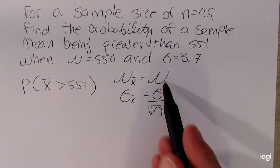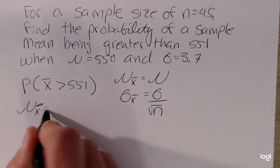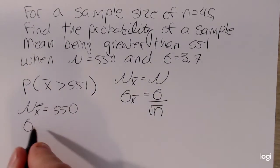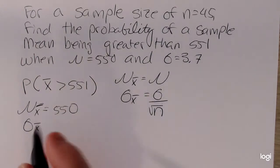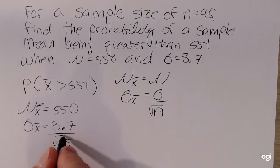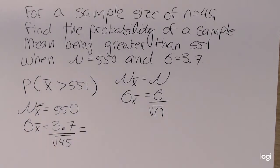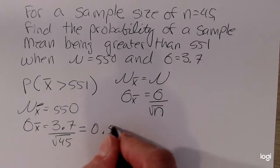So, putting in the values here, we have the mean of the sample means will be 550 and that standard error of the mean, this is also called the standard error of the mean or the standard error, will be equal to the original standard deviation divided by the square root of the sample size. Now, we can get a decimal approximation for that using my calculator super quick, 3.7 divided by the square root of 45 rounding to 4 decimal places is about 0.5516.